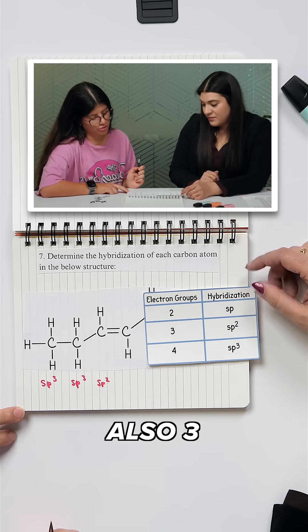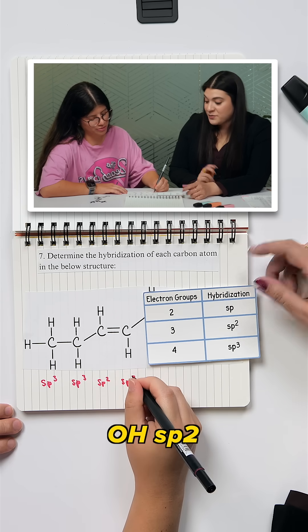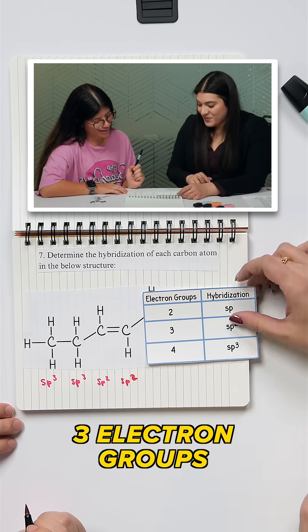What about the next carbon? Also three. Oh, SP2, yes. Yeah, three electron groups, good.